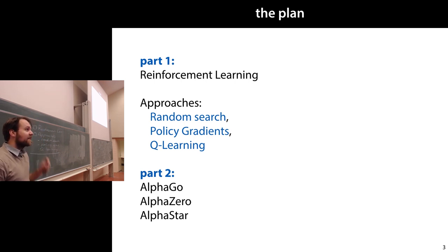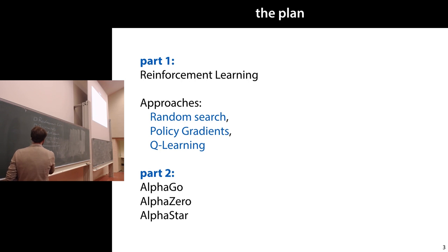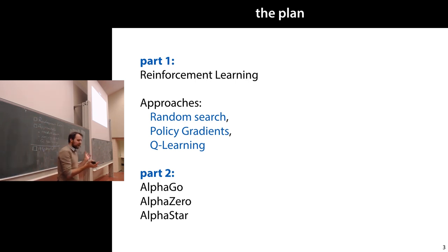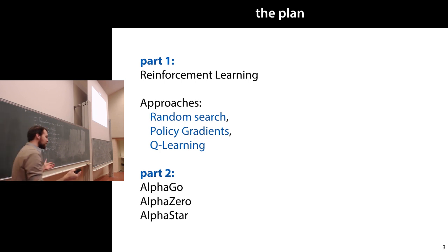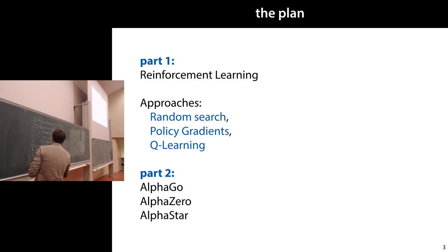After the break, we'll look at some recent developments — basically the reasons why reinforcement learning is such a popular topic these days. In 2016, maybe 2015, a company called DeepMind created a program called AlphaGo, which beat the world's top Go player at that point. That was a big surprise, because Go was considered a star prize of AI — we didn't really think Go was going to be beaten by an AI algorithm, maybe in the next ten years, so it came as a surprise. We'll look at how they did that using reinforcement learning.